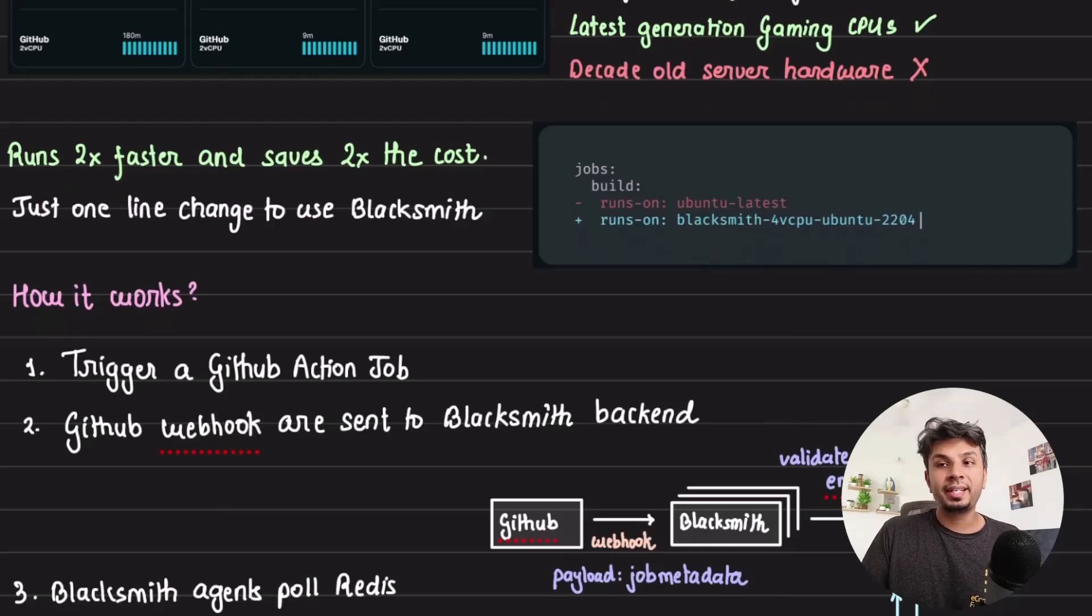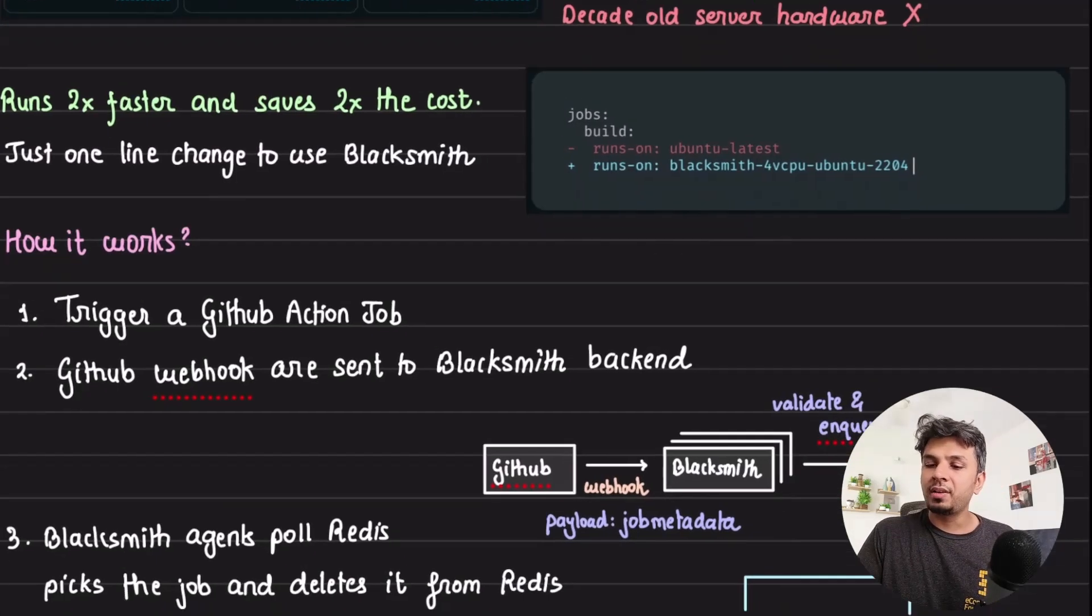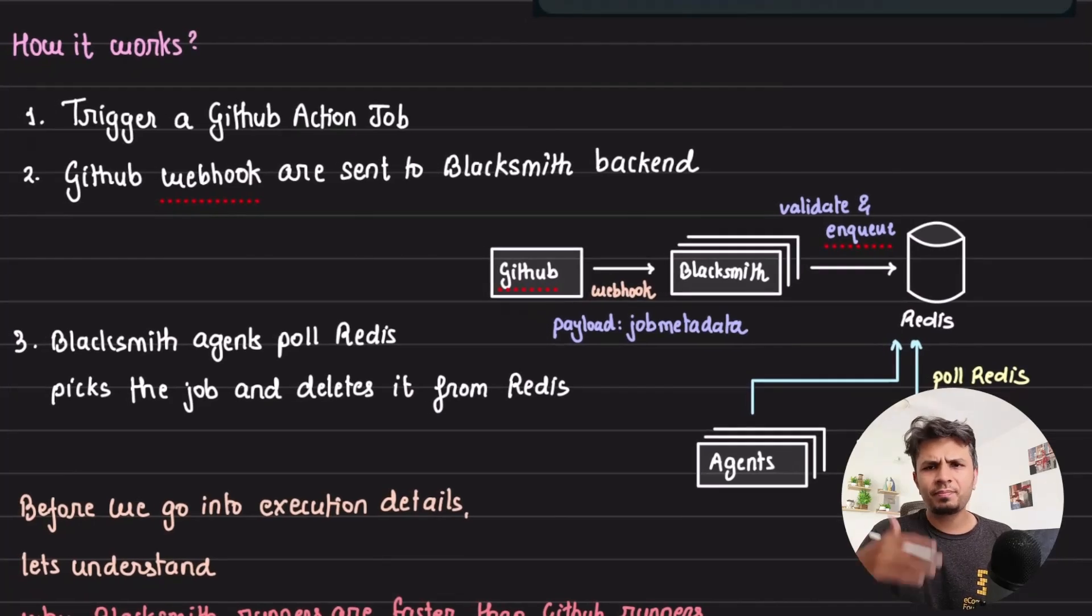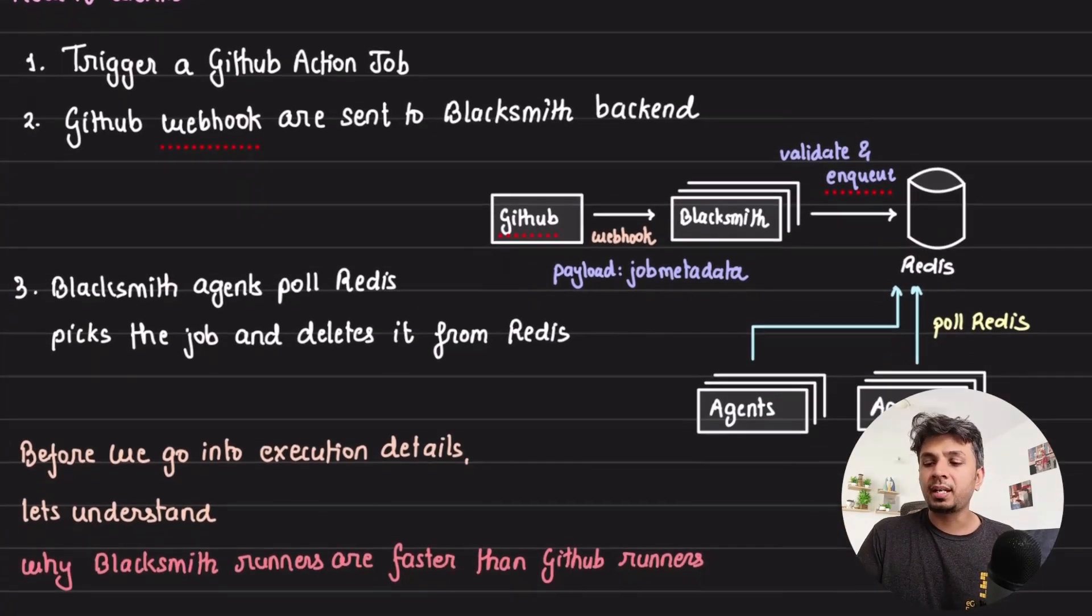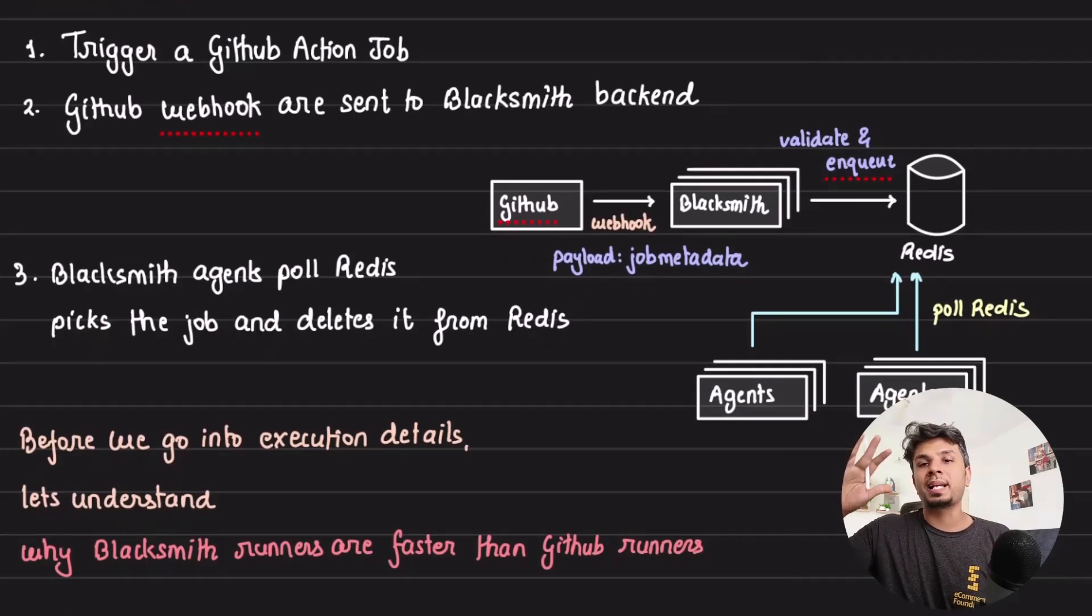Now before we go into the internals of it, let's understand the high level architecture. Now whenever your GitHub action job is triggered, depending on what rules you have configured, the entire job metadata is sent as a webhook call to Blacksmith's backend.